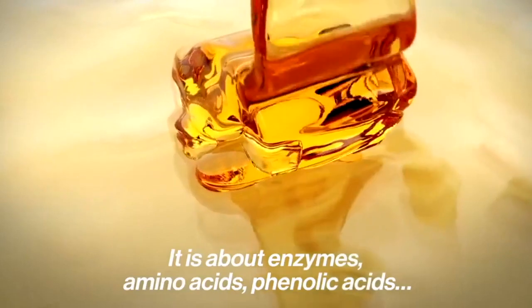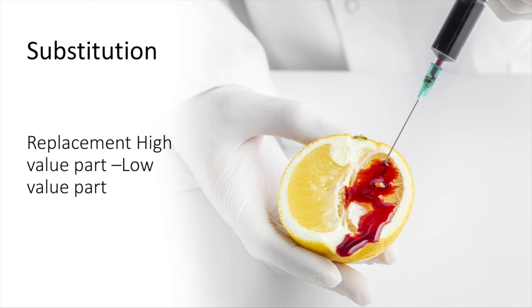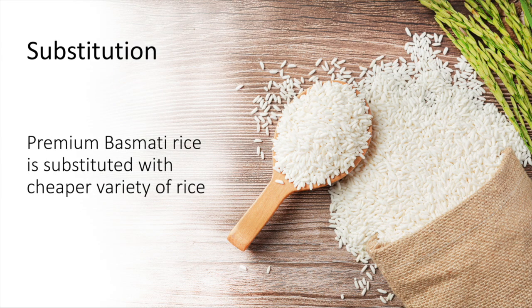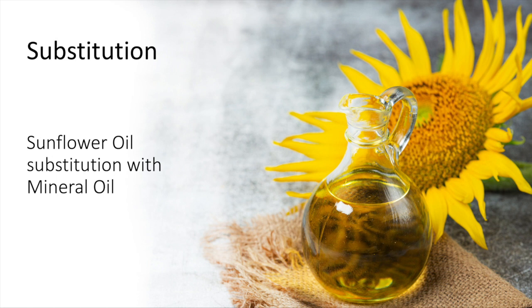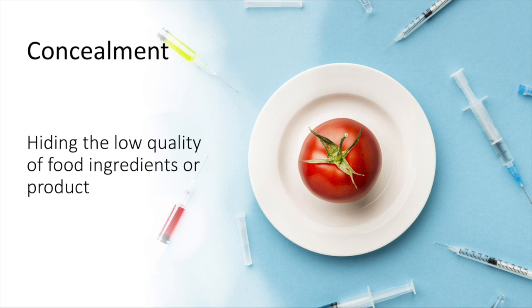Substitution is replacing an ingredient or part of the product of high value with another ingredient or part of lower value. Examples include: premium basmati rice substituted with cheaper varieties of rice, premium cocoa butter substituted by hydrogenated fat in chocolate without labeling, and sunflower oil substituted with mineral oil.